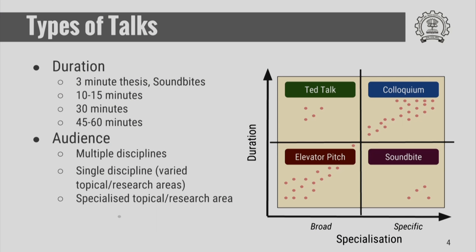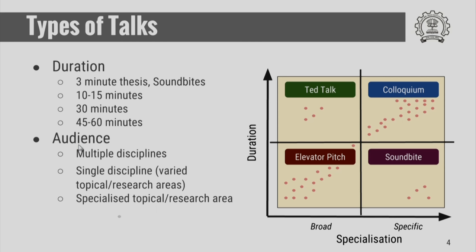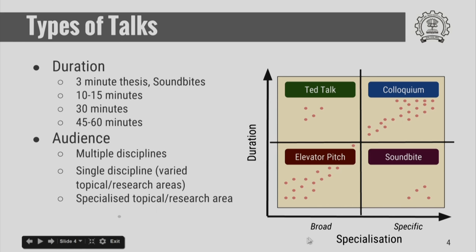Let us see what the different types of talks are. Talks can be broadly classified depending on the duration and the audience. Duration can be as small as 3 minutes, 30 minutes, and mostly up to about an hour — represented on the vertical axis. The audience can be varied: broad, coming from multiple disciplines, or very specialized. I have represented specialization from broad to specific on the horizontal axis.